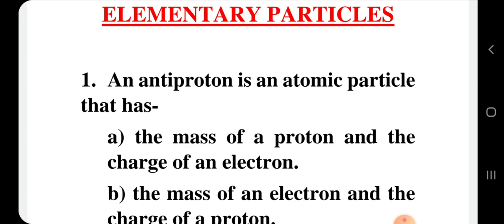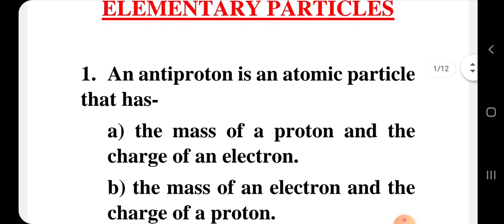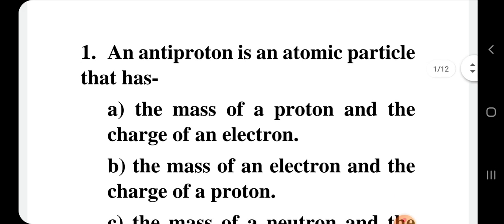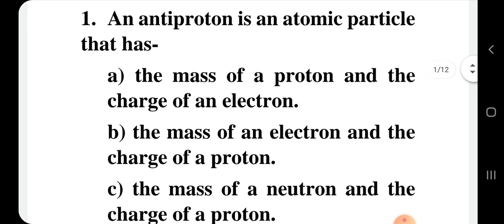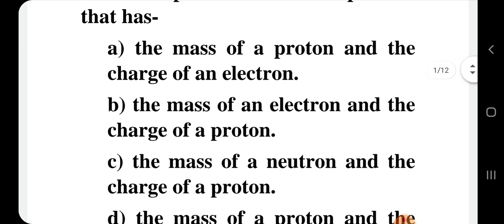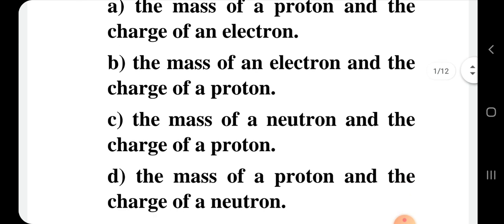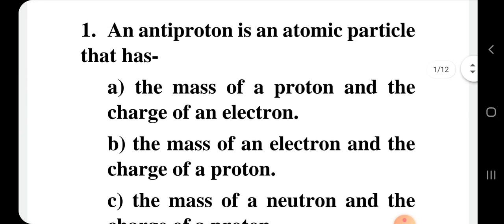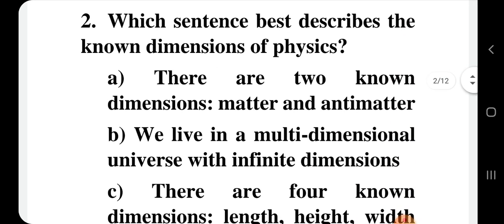So the mass of the proton and the charge of an electron — you can see that the mass of a proton and the charge of a proton, and the charge of a neutron — neutron has no charge, so that option is also wrong. Question number 1 correct option is option A: the mass of a proton and the charge of an electron.